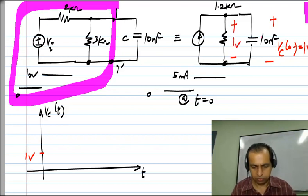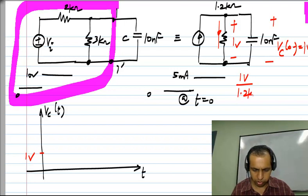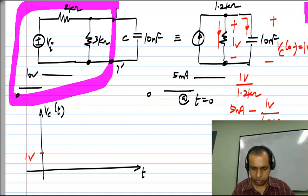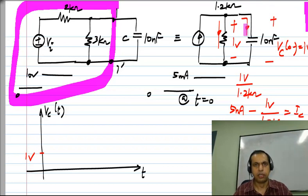Now, what happens is because we have 1 volt over here and 1.2 kilo ohms, so a certain current is taken away by the resistor and that will be equal to 1 volt by 1.2 kilo ohms. The remaining current 5 milliamps minus 1 volt by 1.2 kilo ohms, so that will flow through the capacitor just after T equals 0 and that will make the capacitor voltage become larger and larger. As the capacitor voltage increases, more current flows into the resistor.